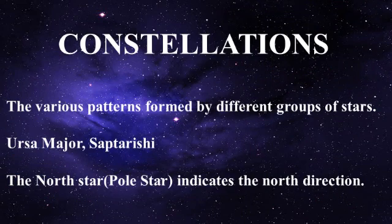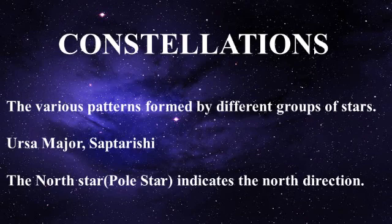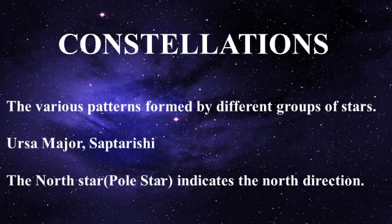Constellations: of the millions and millions of stars in the sky, some appear to be in groups forming definite patterns. These groups of stars are sometimes seen as displaying a pattern such as the shape of an animal or object. These groups are called constellations. There are 88 known constellations in the night sky. Ursa Major and Saptarishi are some of the well-known constellations. Stars help people to determine directions during the night before the invention of the magnetic compass. The north star indicates the north direction and always remains in the same position in the sky. It is also called the pole star.